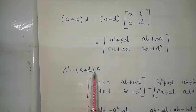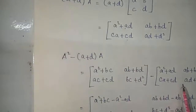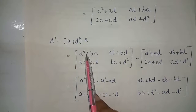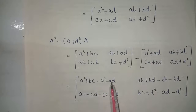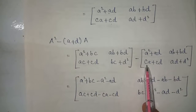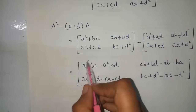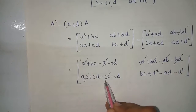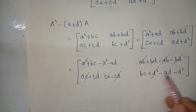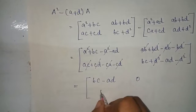Now subtract: A squared minus (a plus d)A. Writing out each position and subtracting corresponding elements — a squared plus bc minus a squared minus ad; ab plus bd minus ab minus bd; ac plus cd minus ac minus cd; bc plus d squared minus ad minus d squared. The a squared, ab, bd, ac, cd, and d squared terms all cancel.